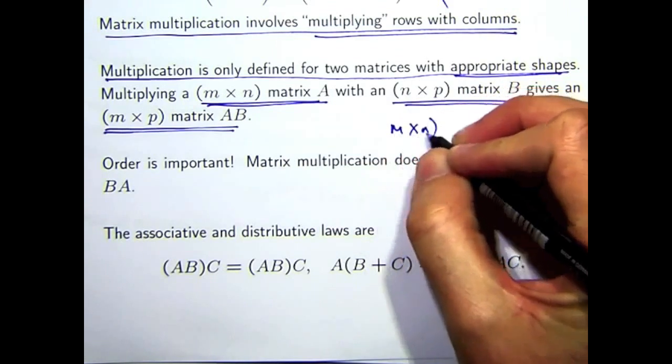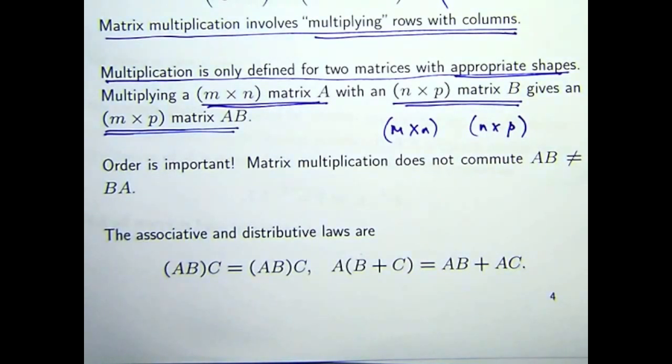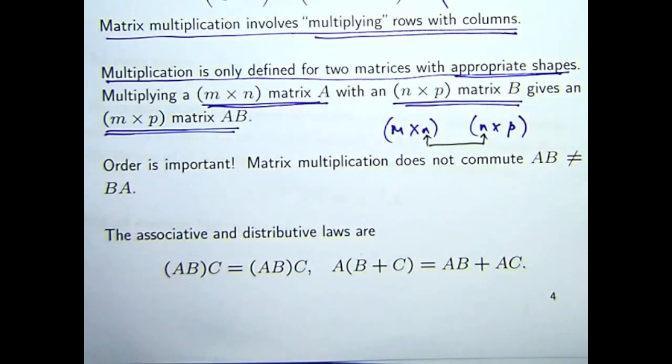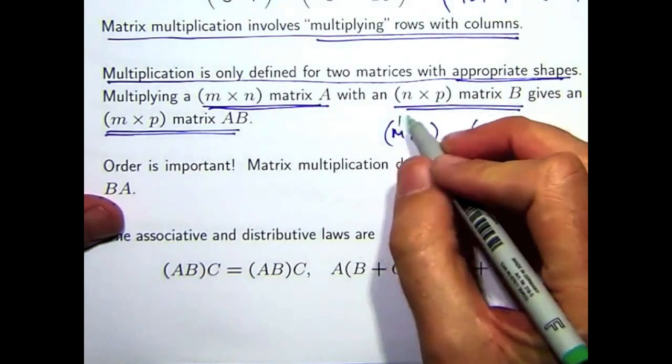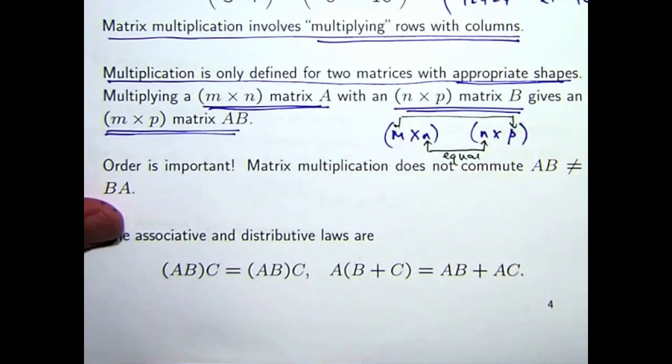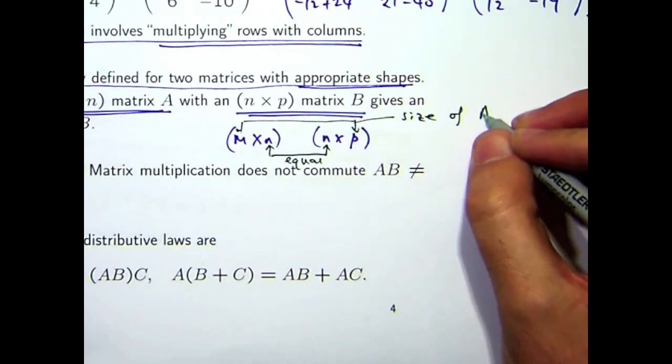So, let's look at these two sizes. Now, matrix multiplication only makes sense if these two inside values are the same. And to predict the size of the product, so these things have to be equal. To predict the size of the matrix, it's the outside values, m by p. So, this then will be the size or the shape of the product.